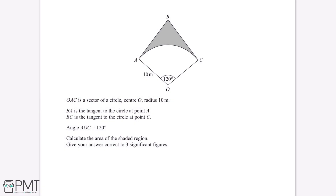OAC is a sector of a circle, centre O, radius 10 metres. BA is the tangent to the circle at point A, and BC is the tangent to the circle at point C. Angle AOC equals 120 degrees. Calculate the area of the shaded region. Give your answer correct to three significant figures.